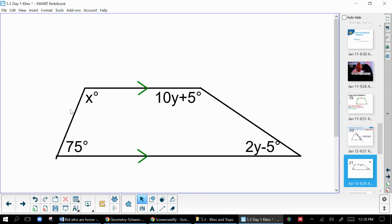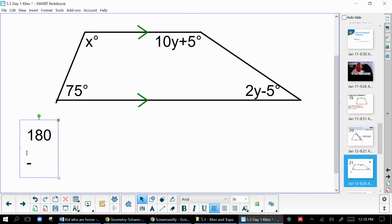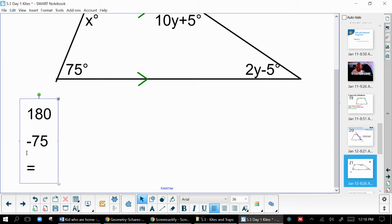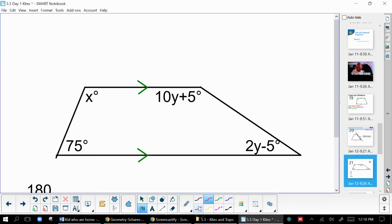The first one here, if we want to find x, not so bad. We just need to know that those two angles do add up to 180. And so I'm going to take 180 minus 75. And that's going to equal 105. So I know that x is 105.